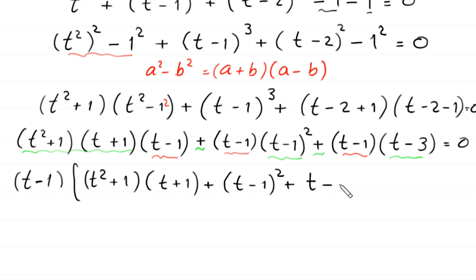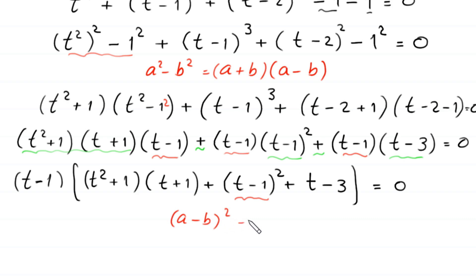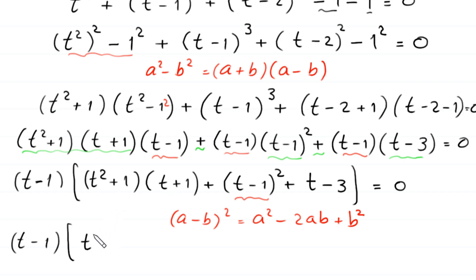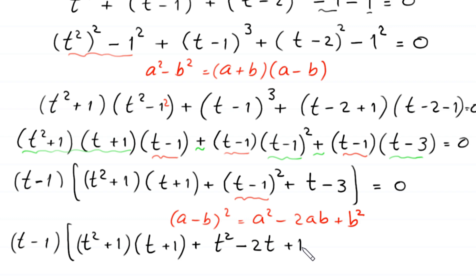Now we expand (t-1)² using the identity (a-b)² = a² - 2ab + b², which gives t² - 2t + 1. So the bracket becomes (t²+1)(t+1) + t² - 2t + 1 + t - 3 = 0, which simplifies to (t²+1)(t+1) + t² - t - 2 = 0.